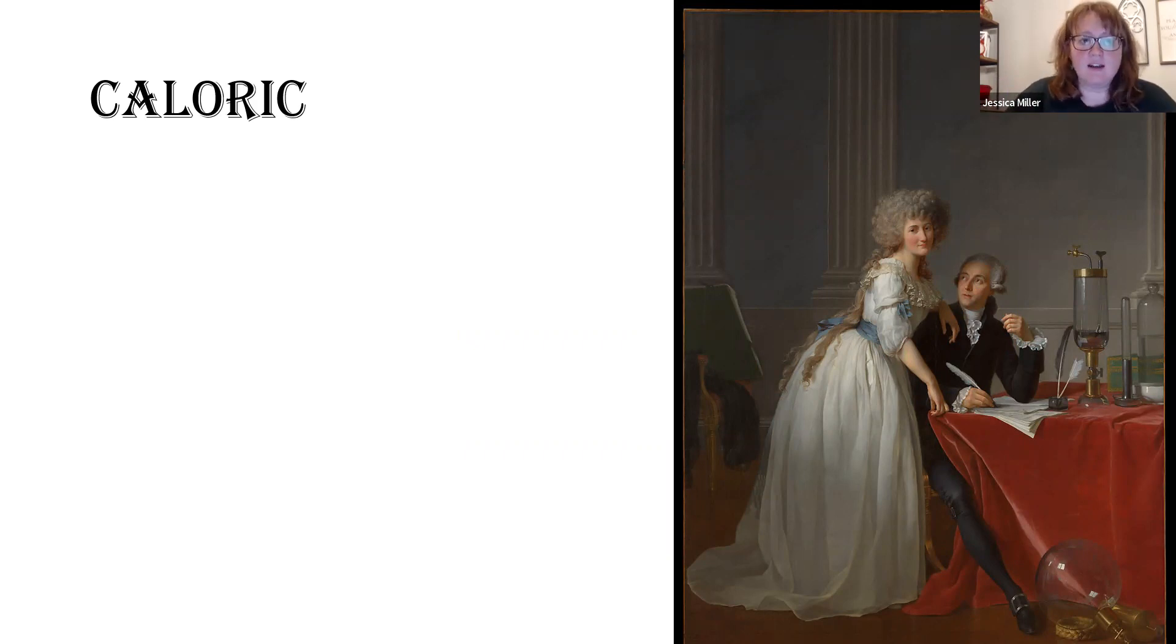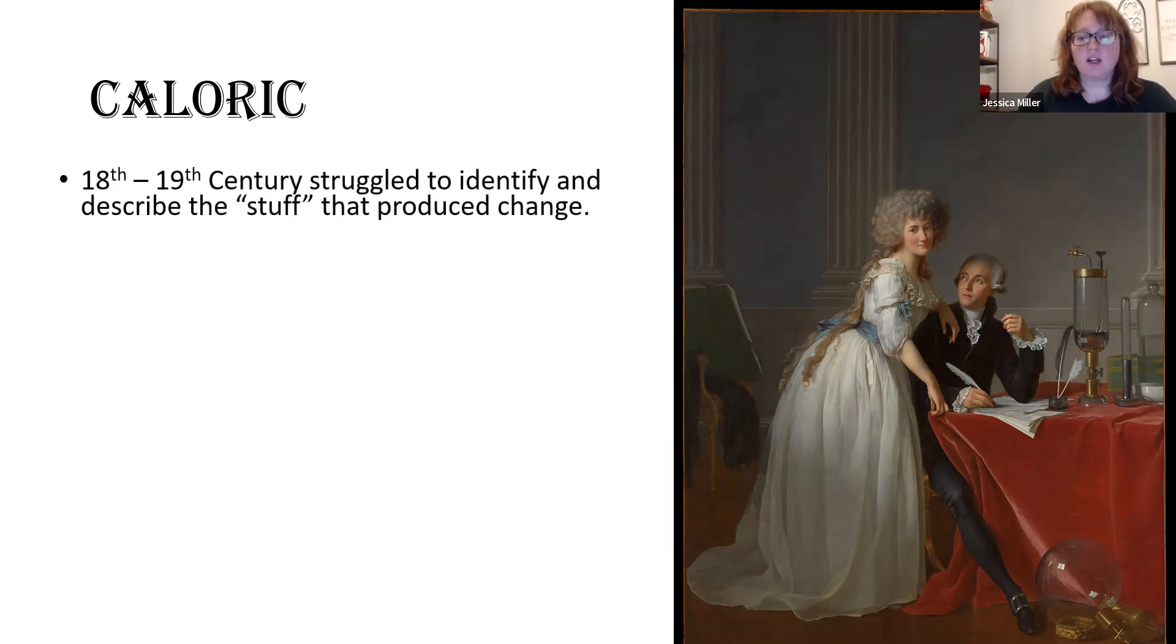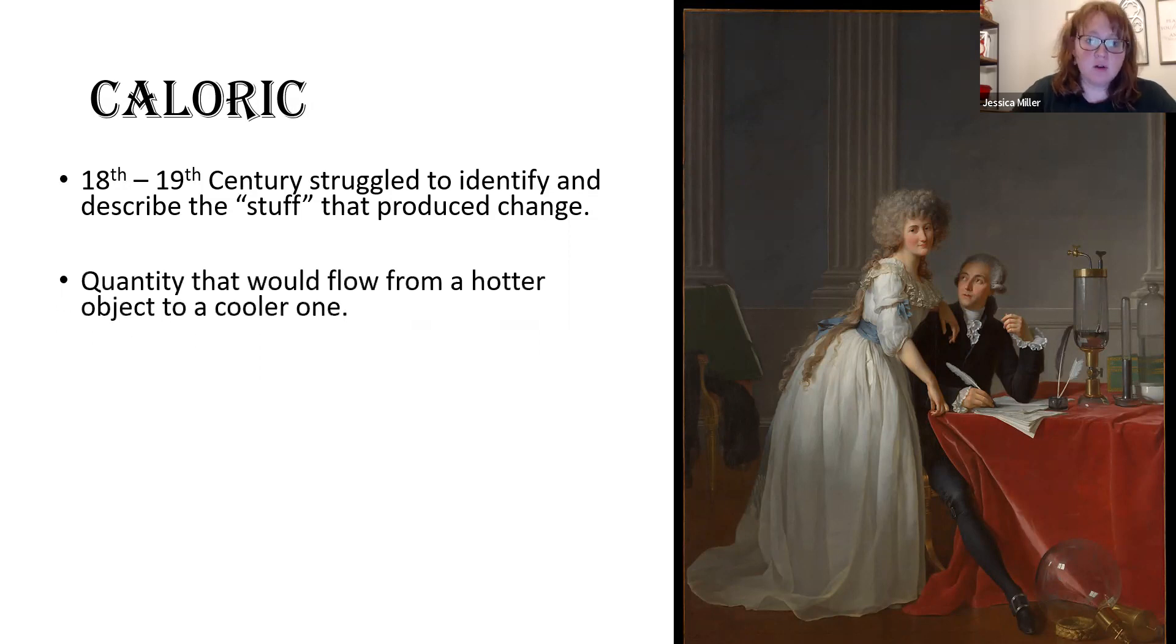So the first thing we're going to look at is the term caloric. In the 18th to 19th century, people were struggling to identify the stuff that produced change. Caloric was defined as this quantity that would flow from a hotter object to a cooler one, because we understood that things naturally cooled down. So the caloric must have been a cause for the warming or cooling.